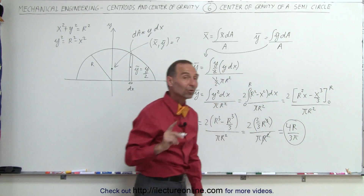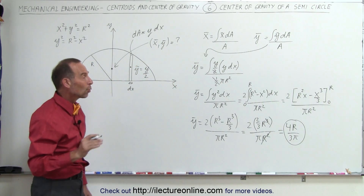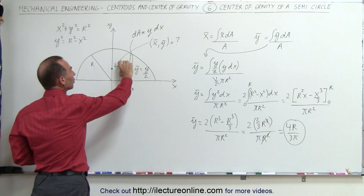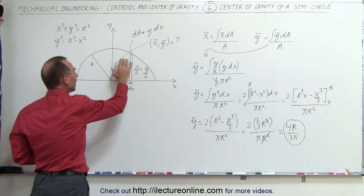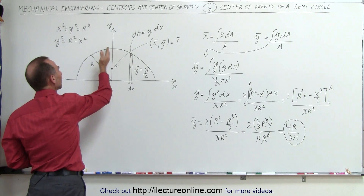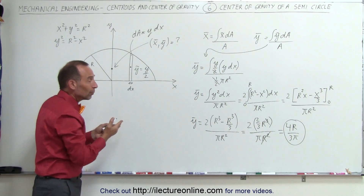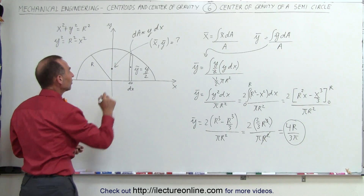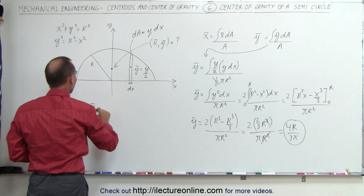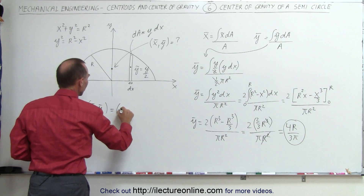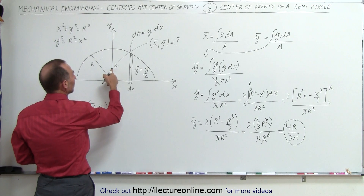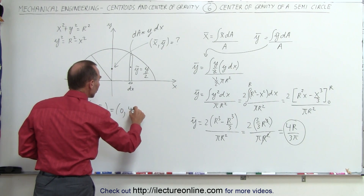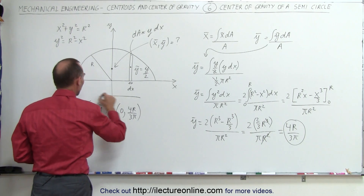Notice that is the exact same result as we got when we did a quarter circle, which makes sense — if we find the y-coordinate of the center of gravity for the right side, and for the left side, when we add them together we get the exact same y-coordinate for the whole semicircle. So the coordinates of the center of gravity are x equals 0, and y equals 4r divided by 3 pi — just like it is for the quarter circle.